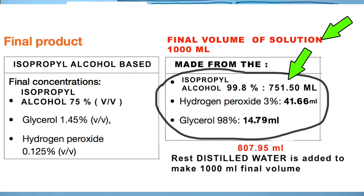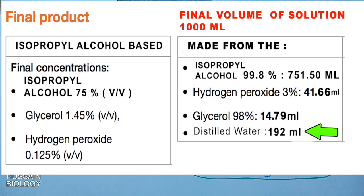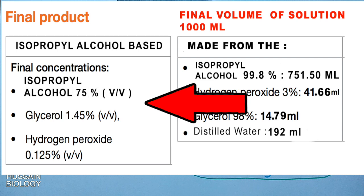We also need glycerol 14.79 ml and hydrogen peroxide 41.66 ml, making a total of 807.95 ml. To make it up to 1000 ml final volume, we add 192 ml of distilled water. This gives us the final solution with 75% isopropyl alcohol, 1.45% glycerol, and 0.125% hydrogen peroxide, as recommended by the WHO.